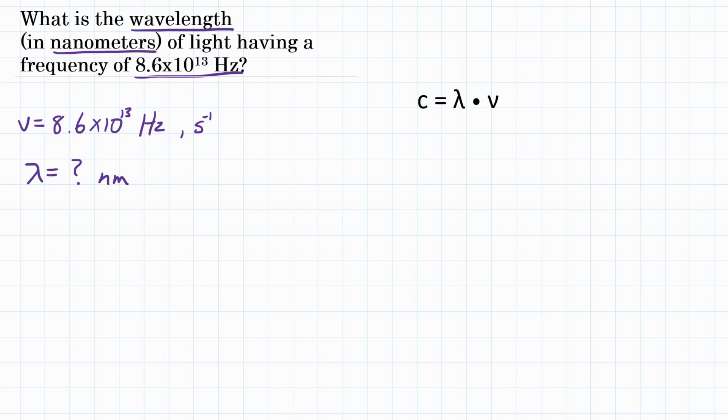So given frequency and looking for wavelength, we are going to use this equation over here where c, which is the speed of light, is equal to wavelength times frequency.